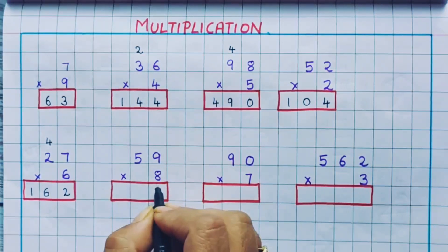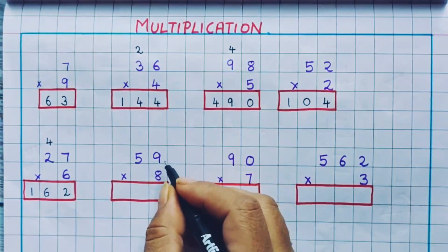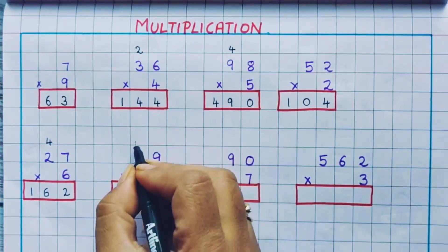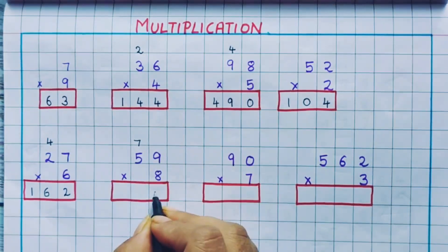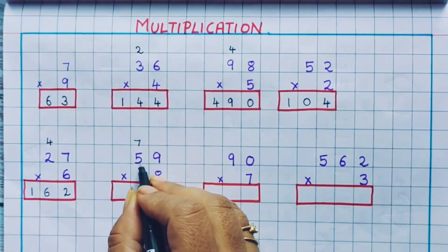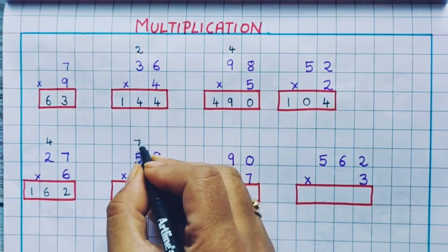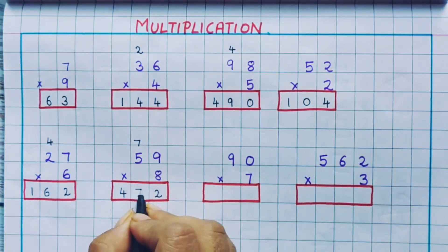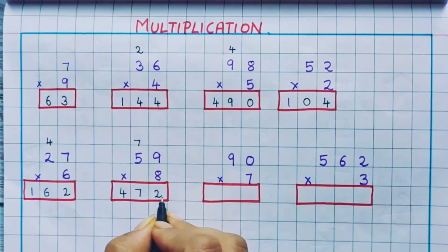Next: 59 into 8. 8 9s are 72, so we write 7 as a carryover and 2 here. Now 8 5s are 40, and 40 plus 7 is 47. So the answer is 472.